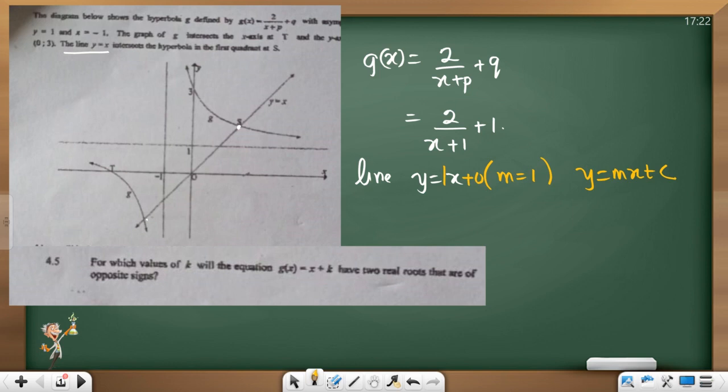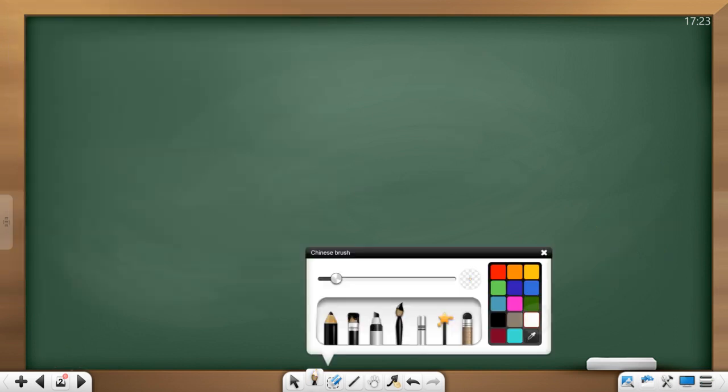Now, for which values of k will the equation g of x equals x plus k have two real roots that are of opposite signs? It is important to make this question very easy. What are roots? Let's quickly explain something here.